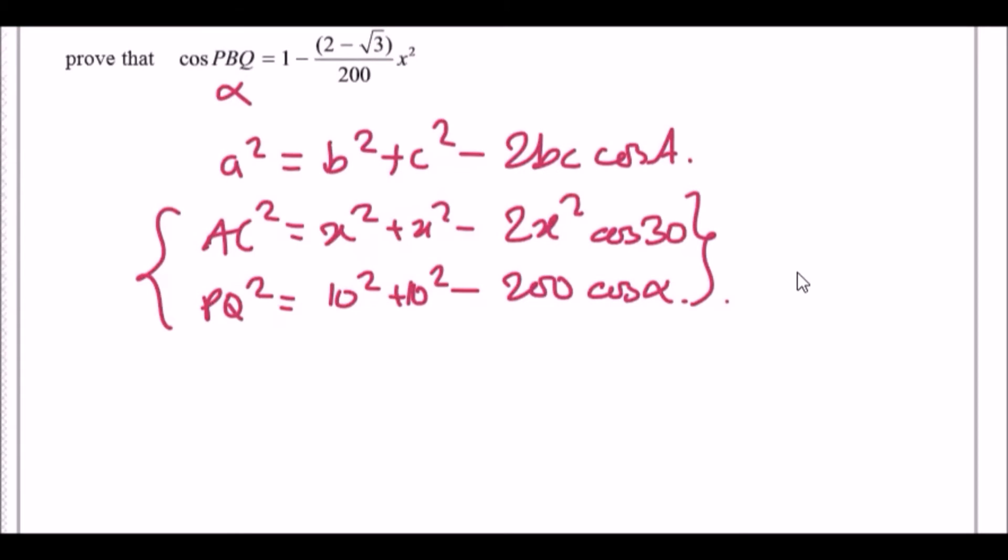So we can say now, so x² plus x², we can say that 2x² minus 2x² cos 30, will get to cos 30 in a second, must equal 10² plus 10², so 100 plus 100 which is 200, minus 200 cos alpha.